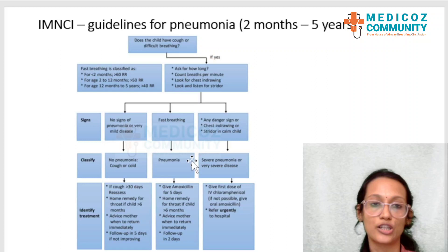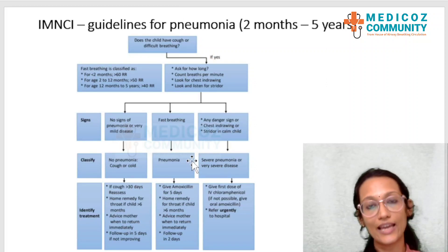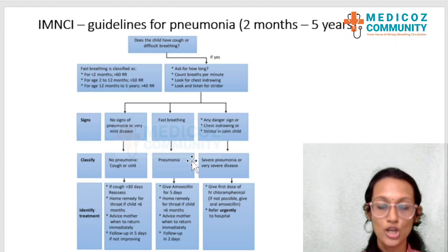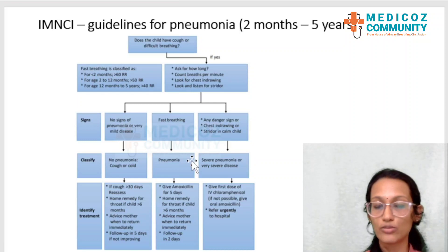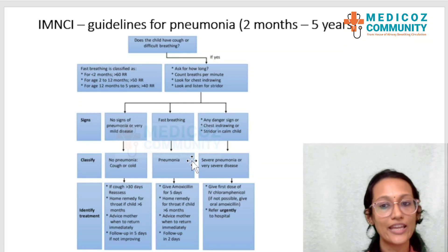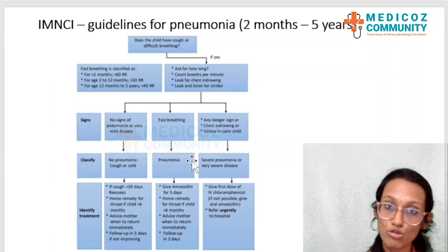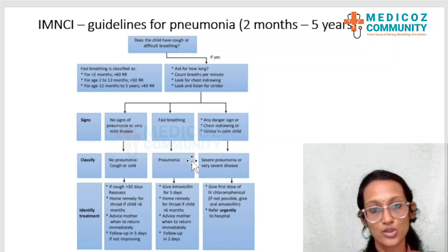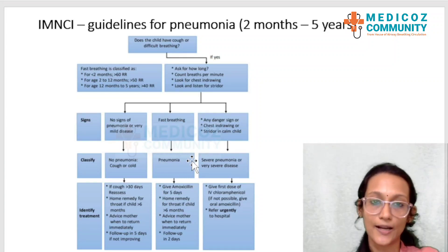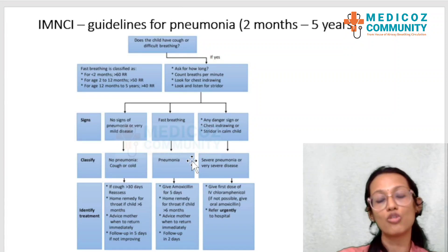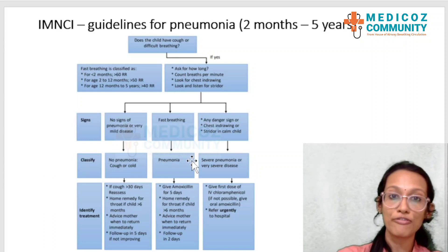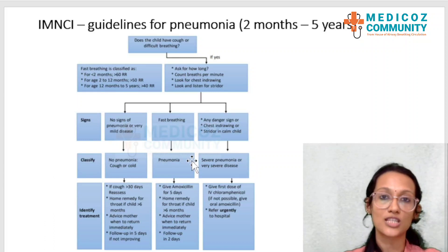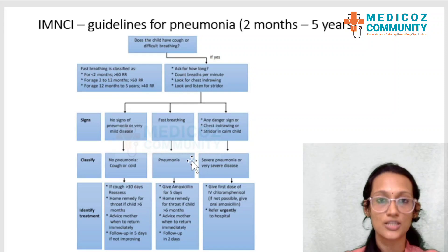Moving on to the last topic — IMNCI guidelines for pneumonia in children. IMNCI stands for Integrated Management of Neonatal and Childhood Illness. The IMNCI guideline charts are divided into charts for children less than two months, and for children from two months to five years. Here we discuss how to classify and manage a child presenting with cough or difficulty in breathing, which are the usual symptoms when suspecting ARI or acute respiratory infection.